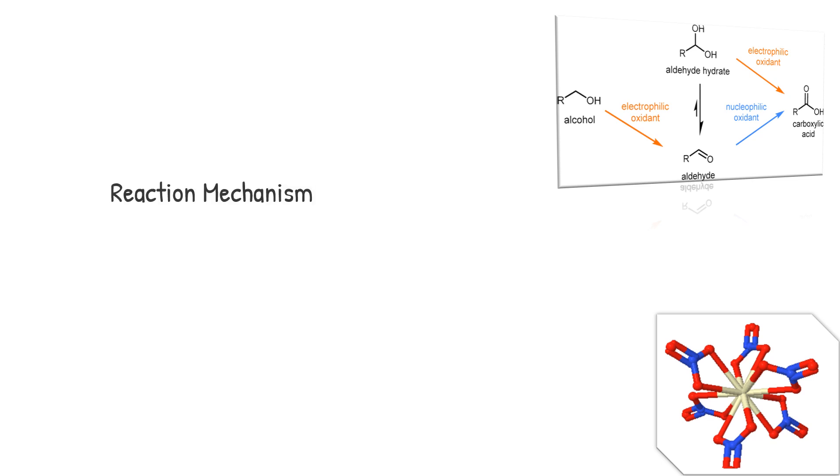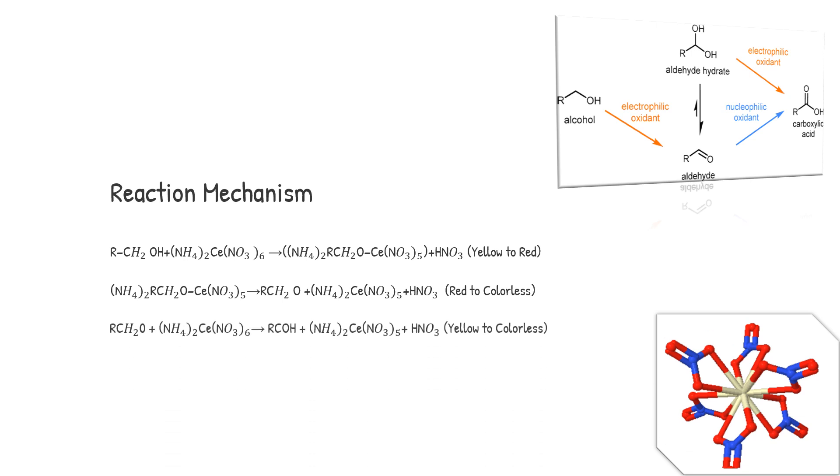The ceric ammonium nitrate test involves a series of reactions. Initially, the alcohol forms a complex with the ceric ion. This is followed by oxidation of the alcohol, which causes the red color to fade. The overall sequence for a primary alcohol includes formation of the red complex, oxidation of the alcohol to an aldehyde, and further oxidation to a carboxylic acid. The rates of these oxidation steps depend on the structure of the hydroxy compound.